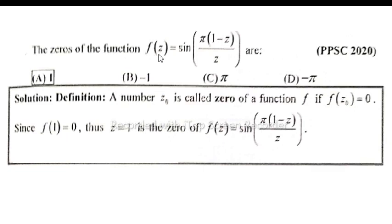Solution: A number z₀ is called a zero of a function f if f(z₀) = 0. Since f(1) = 0, thus z = 1 is the zero of f(z) = sin(π(1-z)/z).